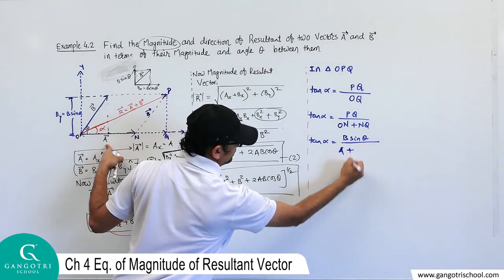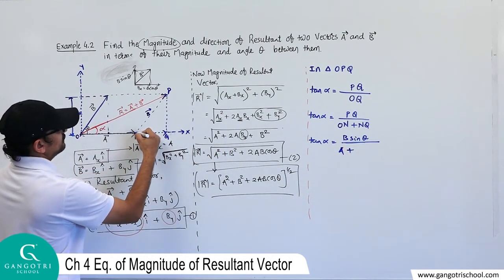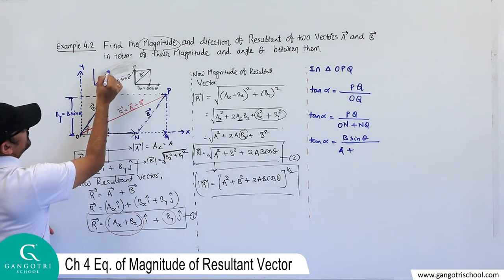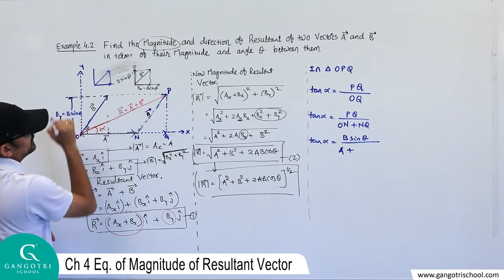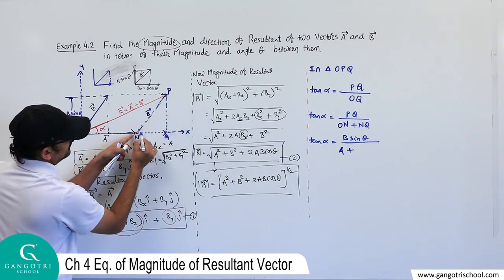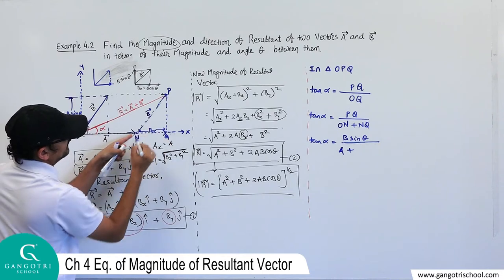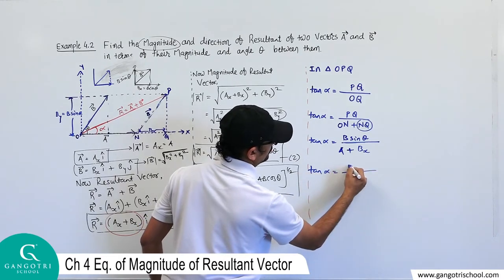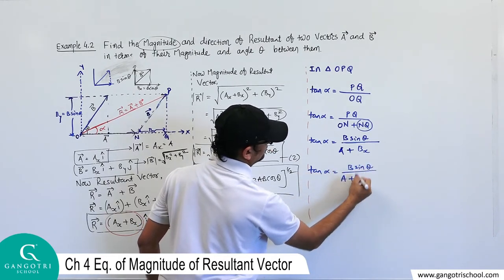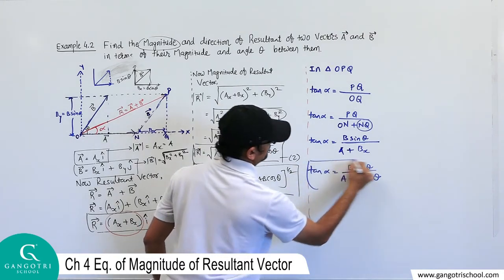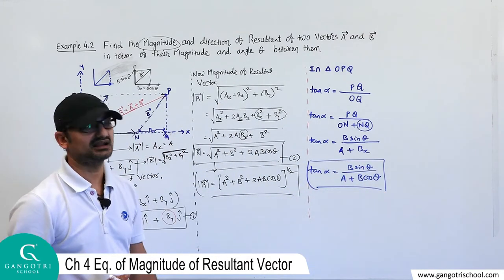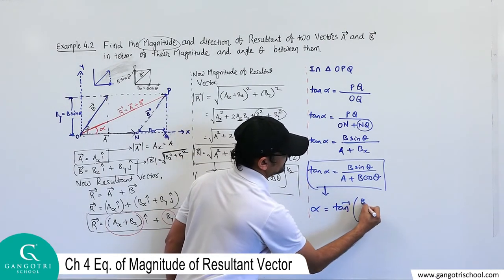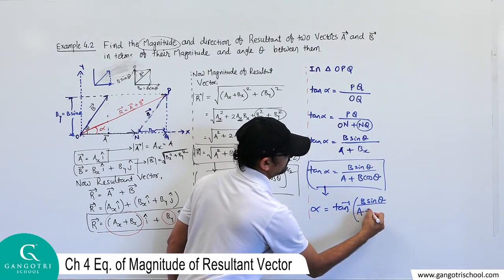NQ is the x component of vector B, which equals Bx = b·cosθ. So tan α = b·sinθ / (a + b·cosθ). Therefore, the direction angle is α = tan⁻¹[b·sinθ / (a + b·cosθ)]. This is the angle made by the resultant vector with the x-axis.